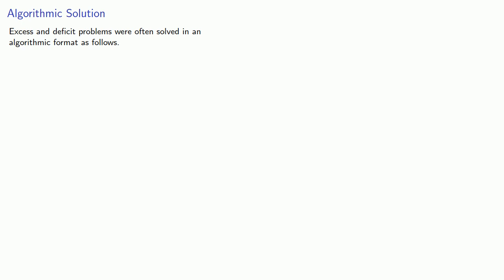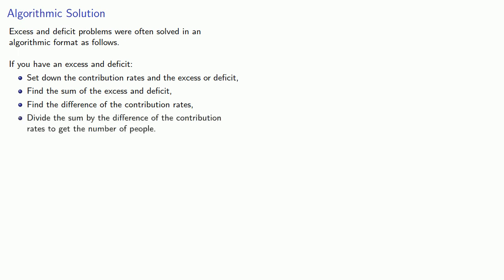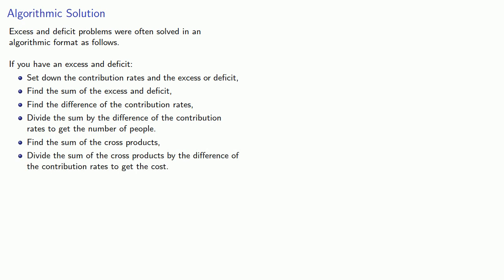Liu He actually gave two solutions, and that was the second one. Excess and deficit problems were often solved in an algorithmic format: set down the contribution rates and the excess or deficit, find the sum of the excess and deficit, find the difference of the contribution rates, divide the sum by the difference to get the number of people, find the sum of the cross products, and divide by the difference of the contribution rates to get the cost.